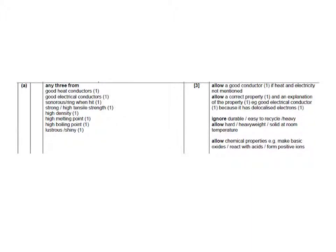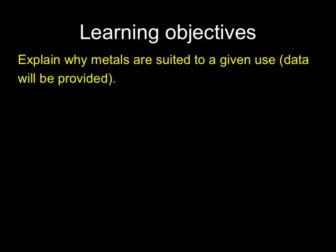As you can see there's a great number of possible choices here, and pretty much all of them are on the specification. The ones which actually aren't on the specification are sonorous, or ring when hit, and also more specialist properties such as that they make basic oxides when they react with oxygen. This part of the specification is rather open ended — it says explain why metals are suited to a given use, and data will be provided, leading you to questions where they give you a table of properties of various metals.